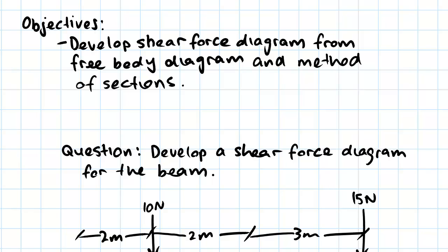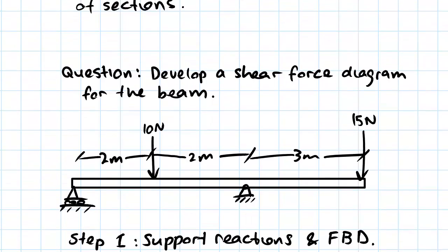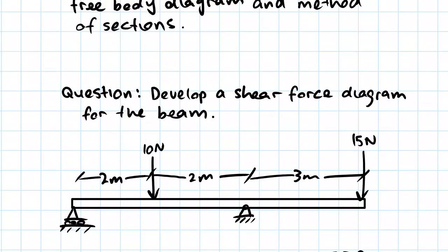The question we've got here is to develop a shear force diagram for the following beam. We have a simply supported beam with a roller joint at the left end, a pin joint three meters from the right end, and two loads. We have one 10 newton load two meters from the left, and a 15 newton load on the right-hand side. The entire length of the beam is seven meters.